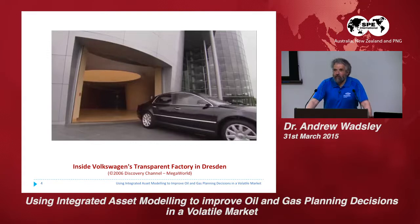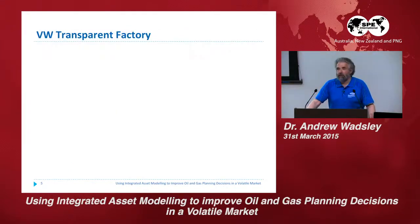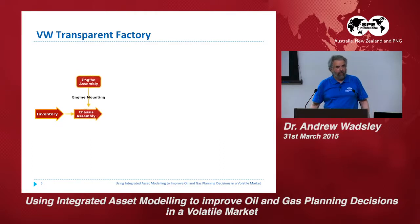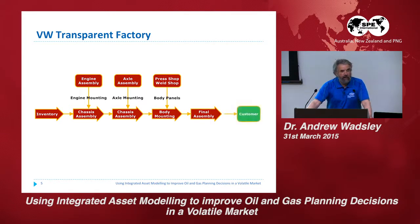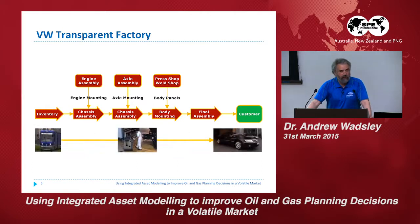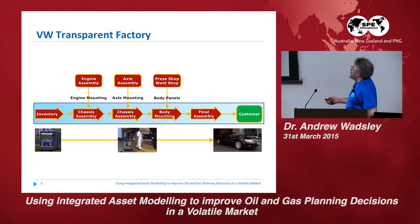We need to focus on the issues that Volkswagen and particularly the German automotive industry does so well. The VW transparent factory has an assembly line starting with inventory — all the components — then engine assembly, axle assembly, press shop, weld shop, final assembly, and out to the customer. In physical terms: inventory comes in by tram, the car comes out as what Volkswagen is selling, and in the middle, people are doing the assembly.